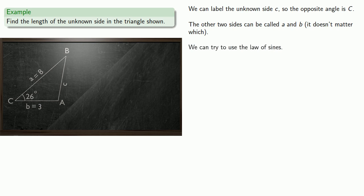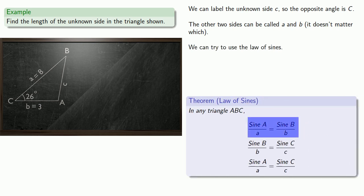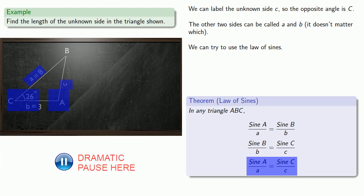And we can try to use the law of sines. Let's see, this first equation requires us to have angles A and B and side lengths a and b. And while we have the side lengths, we don't know either of the angles, so there are too many unknowns to use this equation. So the second equation requires us to have angles B and C and side lengths b and c. But again, while we know angle C and we know the side length b, we don't know the measure of angle B or the side length c, so we can't use this equation either. This last equation requires us to have the measure of angles A and C and the side lengths a and c. And this time, we still don't have enough information to use this equation.